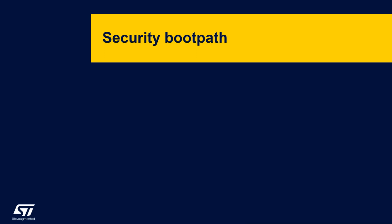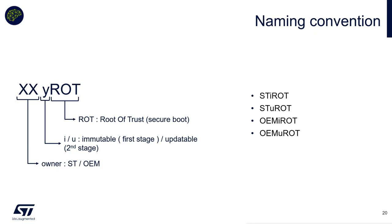Let's talk about the secure boot path. As a naming convention, the first two letters indicate the owner of the component — either ISD or OEM. The next letter is E for immutable (first stage bootloader) or U for updatable (second stage bootloader). 'ROT' stands for root of trust, meaning secure boot. Options include STI-ROT (the ROM bootloader available on H573), the STI-ROT second stage bootloader delivered only within the secure manager context, or your own implementation of first and second stage bootloaders — OMI-ROT and OMU-ROT — for which we provide example code based on MCU-Boot.